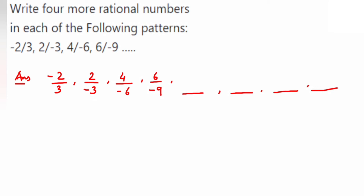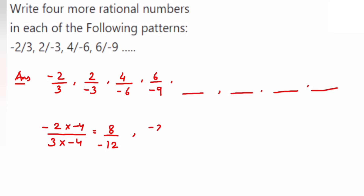So both numerator and denominator are multiplied by a negative number. Multiplying by -3 gives: -2 × -3 = 6 and -3 × -3 = -9. Next, we multiply by -4 — so -2/3 multiplied by -4 in both numerator and denominator gives us 8/(-12).